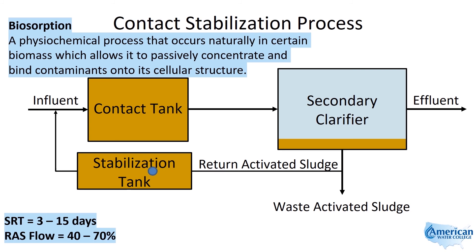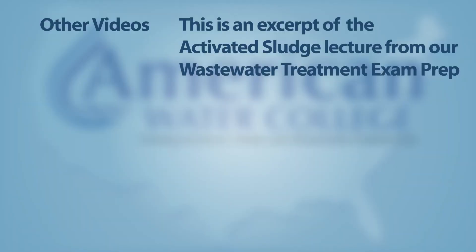The RAS flow is set in the range of 40 to 70%, so 40 to 70% of the activated sludge is returned and the balance is wasted.